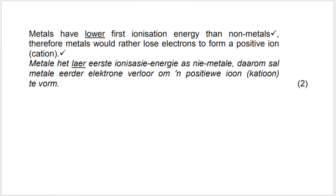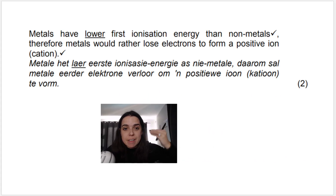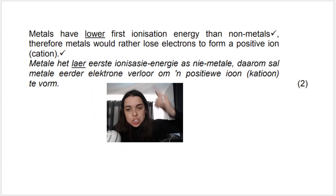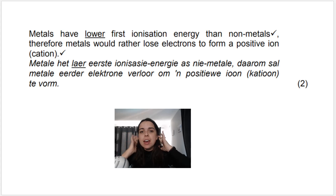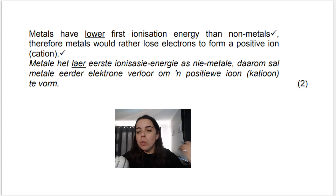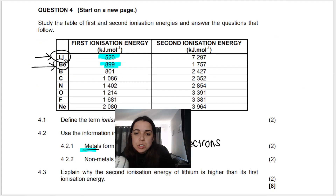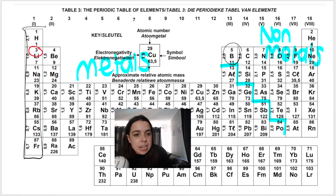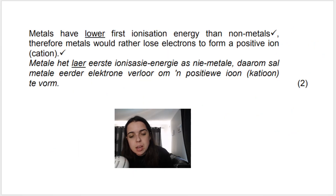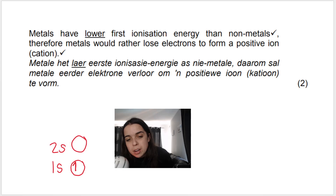This is how you would answer this question in your exam: metals have a lower first ionization energy than non-metals, so they would rather lose electrons to form a positive ion. All sections of chemistry are connected. Let me draw the Aufbau diagram for lithium, which has three electrons. Lithium has 1s with one orbital, and 2s with one orbital, filling electrons 1, 2, 3.